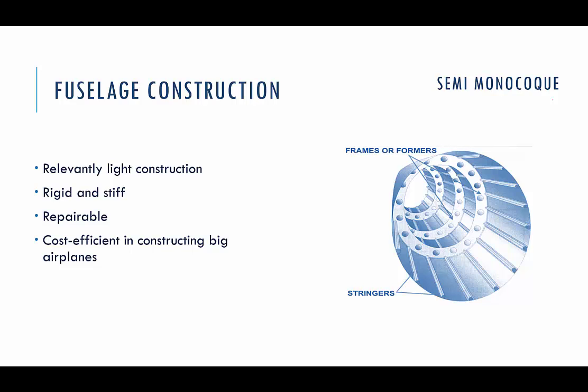Semi-monocoque is light, rigid, and relatively easy to construct. Commonly used aluminum alloys or other lightweight alloys can be used in making the skin and skin-supporting structure. It consists of stressed skin like monocoque, but the outer skin is additionally supported by stringers, as in frame construction. Semi-monocoque fuselage has high structural integrity and can bear local damages and allow local repairs of the skin.